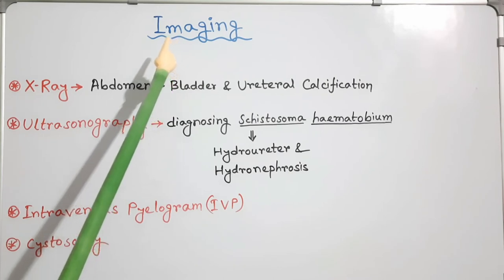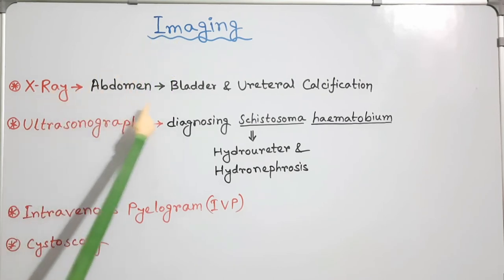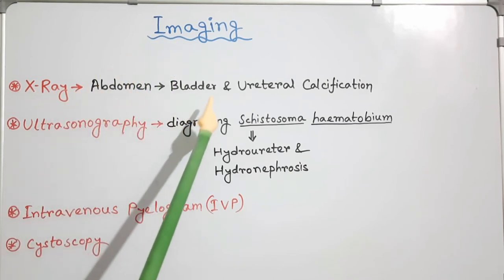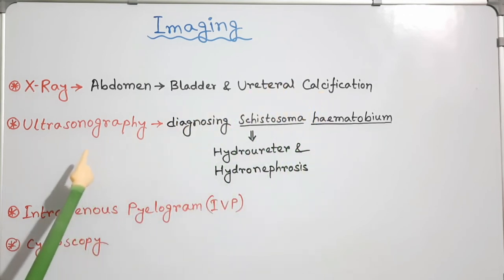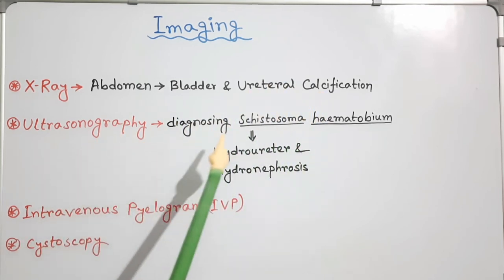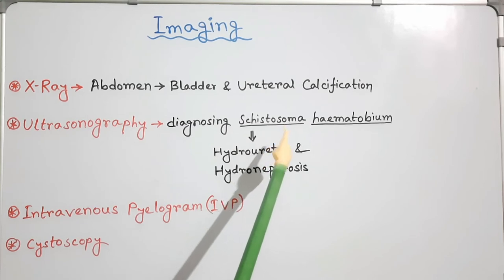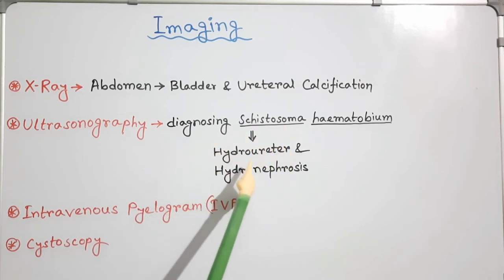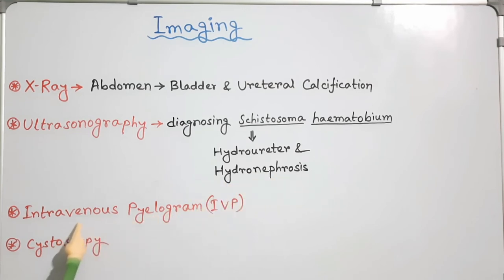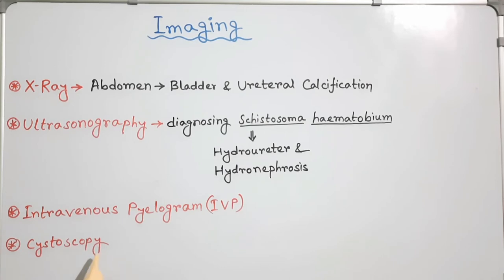Imaging: X-ray of the abdomen may show bladder and ureteral calcification. Ultrasonography is also useful in diagnosing Schistosoma haematobium infection and may show hydroureter and hydronephrosis. Intravenous pyelogram and cystoscopy are also useful in indirect diagnosis of the disease.